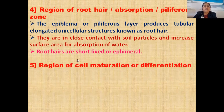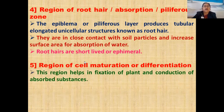Next region: region of cell maturation or cell differentiation. In this region cells become mature and differentiation takes place, forming tissues. Tissue means a group of cells having similar function and similar structure. This region is present above the root hair region and is involved in fixation of the plant and conduction of absorbed substances. Many lateral roots are also developed from this region.